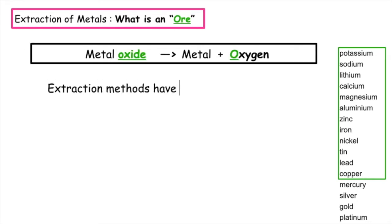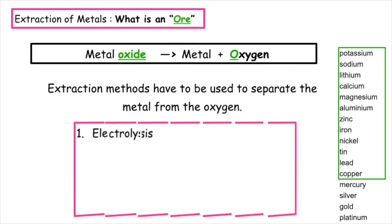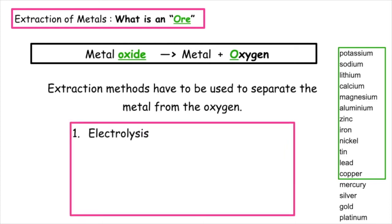Extraction methods have to be used to separate the metal from the oxygen in the metal oxides. There are three different techniques to extract the metal. The first one is electrolysis. The second, heat them with carbon or carbon monoxide, and the third is using heat alone.